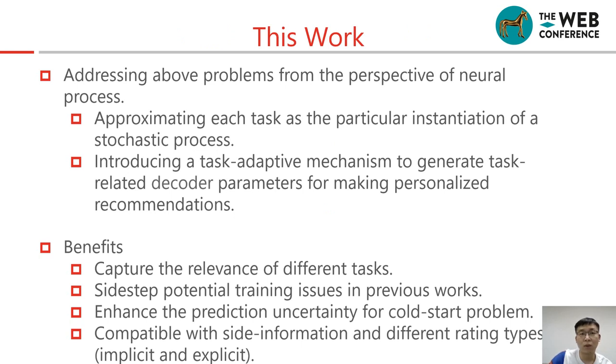This work wants to tackle the problem of cold-start recommendation from the perspective of neural process. We approximate each task as a particular instantiation of a stochastic process. We introduce task-adaptive mechanisms to generate task-related decoder parameters for making personalized recommendations. The benefits are listed as follows: We can capture the relevance of different tasks, sidestep potential training issues in previous works, enhance the prediction uncertainty for cold-start problem, and be compatible with side information and different rating types, implicit and explicit.